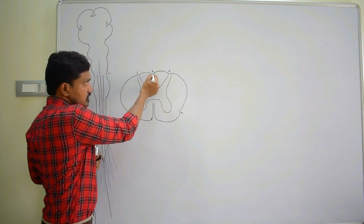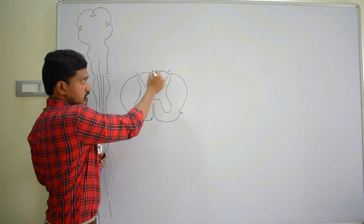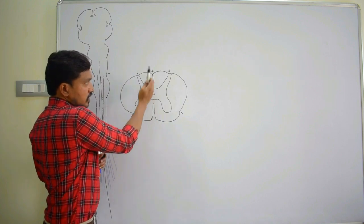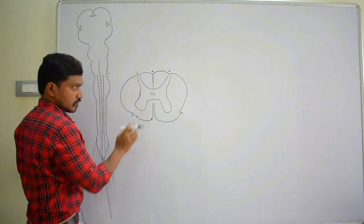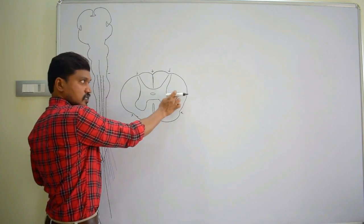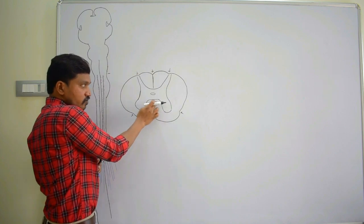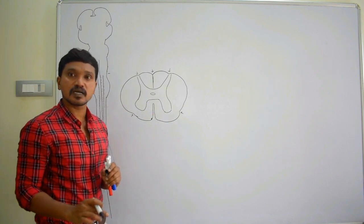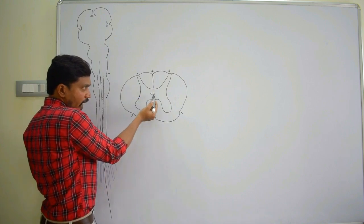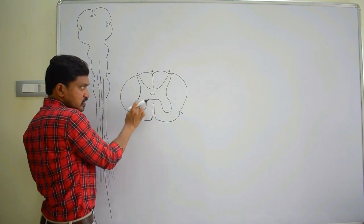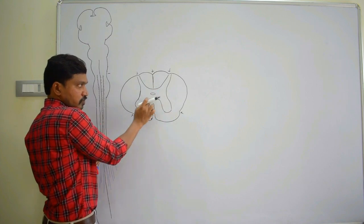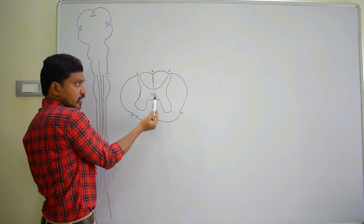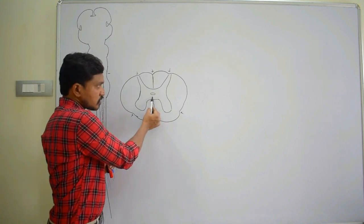Because of the posterior median septum and the anterior median fissure, the spinal cord is divided into right and left halves. The anterior white funiculi of both sides are united by the anterior white commissure. In the grey matter, the portions anterior and posterior to the central canal communicate with each other, forming the anterior grey commissure and posterior grey commissure respectively.